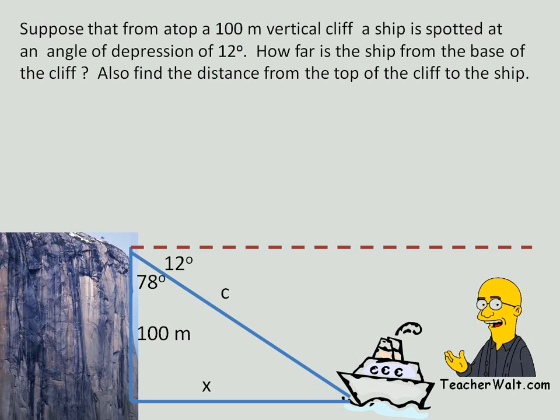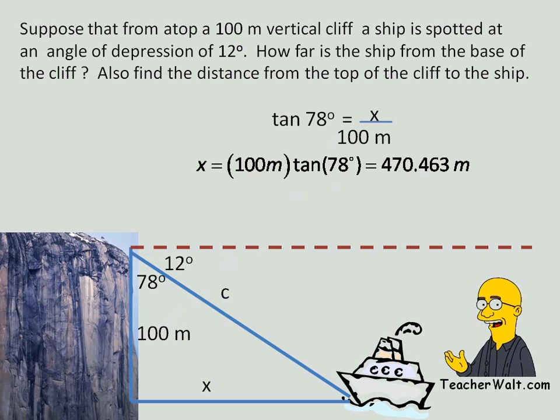Now, we're at the point where we look for a relationship between what we know and what we're trying to find out. First of all, you notice that the side opposite the 78 degrees is x and the side adjacent to it is 100. So right away, that tells us that we might want to use tangent 78 degrees because it is opposite over adjacent. So that gives us a relationship we can use right away. Solving for x as before, we find that x, the distance from the cliff to the ship, is 470.463 meters.